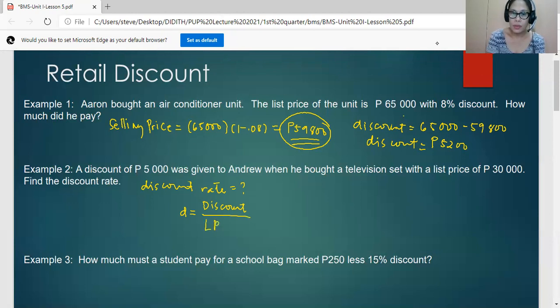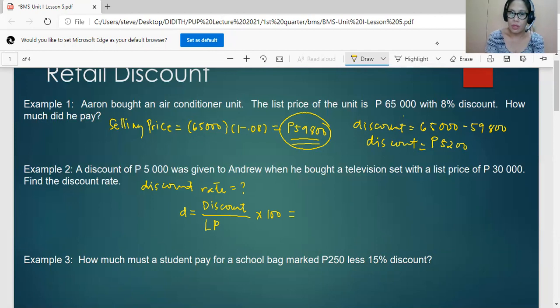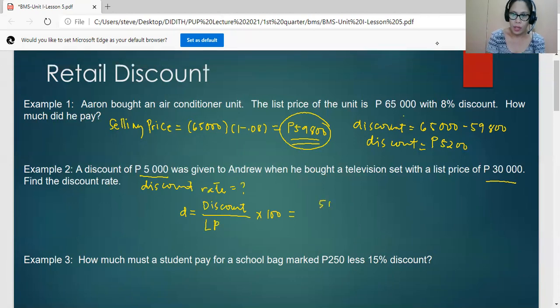Of course, we will convert this to percent, so we will multiply by 100. The discount here is 5,000 pesos and the list price is 30,000. So this is 5,000 divided by 30,000 times 100.